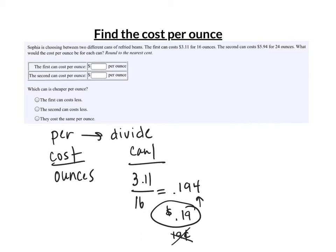Can two was five dollars and ninety-four cents for twenty-four ounces. Again, we're taking the cost per ounce. Cost goes up top, we divide by the ounces.